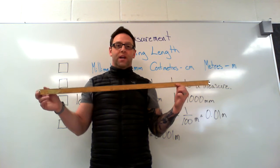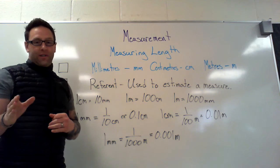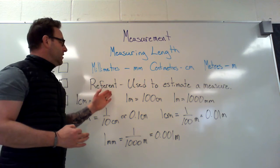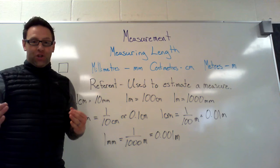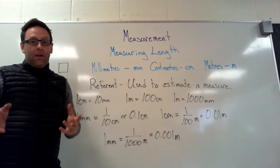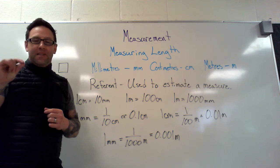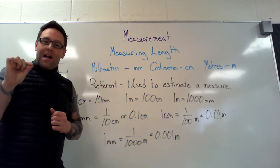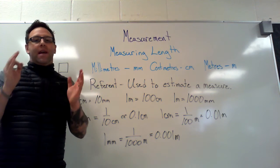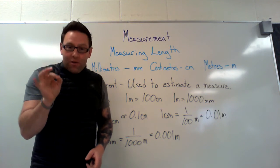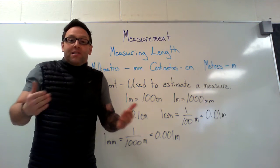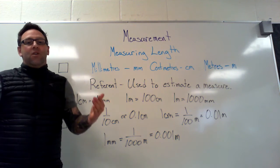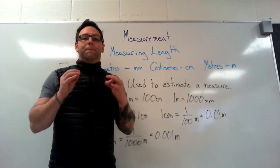The next thing I'm going to talk about is a referent. A referent kind of sounds like the word 'refer,' and we use a referent to refer to or estimate a measure. For example, if you think about a dime, the width of a dime is very, very skinny — but that width is actually about the width of a millimeter. So if you were going to estimate how many millimeters something is, you can take a dime and kind of walk it along to estimate the length in millimeters. Remember, an estimate doesn't have to be exact — it's just giving you a ballpark figure.